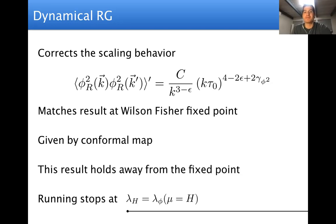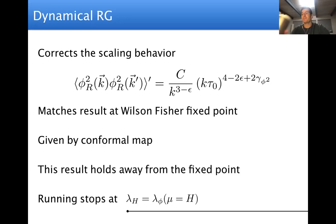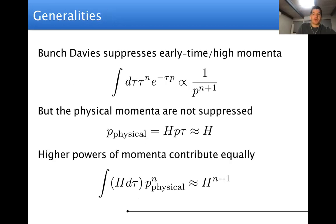This anomalous dimension is precisely the flat space anomalous dimension for the phi^2 operator, because one can conformally map the Wilson-Fisher fixed point to de Sitter space. In four dimensions, lambda phi^4 is marginally irrelevant and runs to zero in flat space, but in de Sitter there's a fixed energy scale H: the coupling perturbed in the UV runs only down to H, acquires some finite non-zero value, and the anomalous dimensions are evaluated with coupling fixed at one energy scale. This is a problem that will persist in general for any correlator.